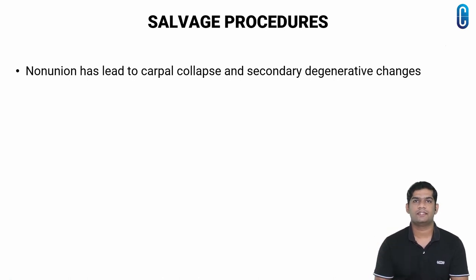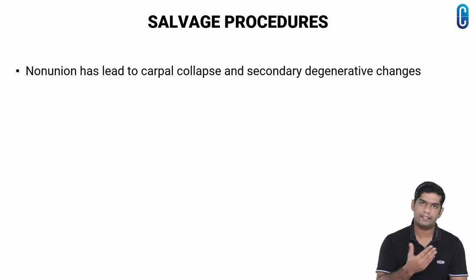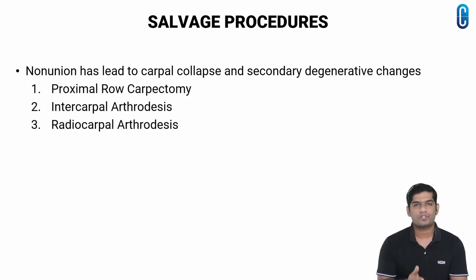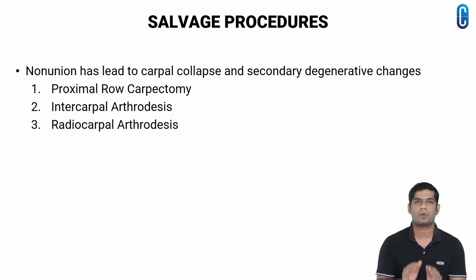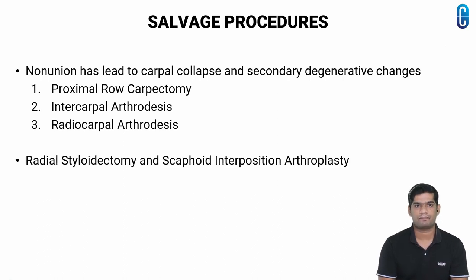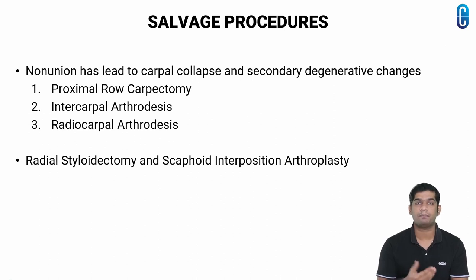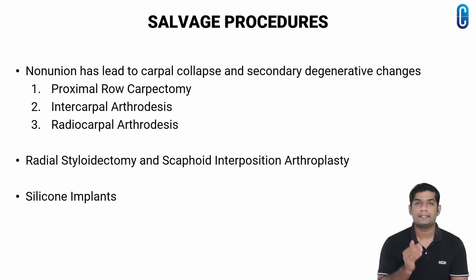Salvage procedures are indicated when nonunion has led to carpal collapse and secondary degenerative changes. Proximal row carpectomy, intercarpal arthrodesis, or radiocarpal arthrodesis is recommended in patients with chronic wrist pain and stiffness. Radial styloidectomy and scaphoid interposition arthroplasty may be combined with other procedures or performed independently in younger patients with less severe symptoms. Silicone implants were used in the past but are now avoided because of silicone synovitis.